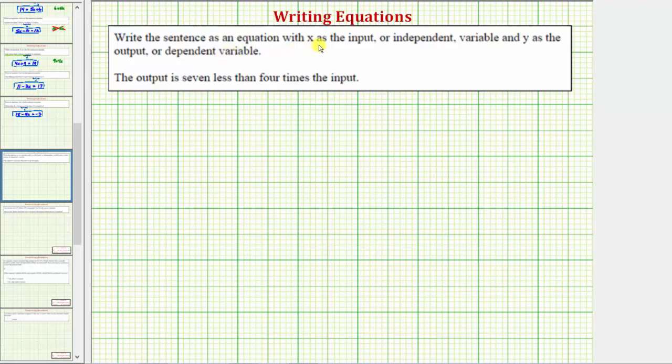We're asked to write these sentences as an equation with x as the input or independent variable and y as the output or dependent variable. And we're given the output is seven less than four times the input.